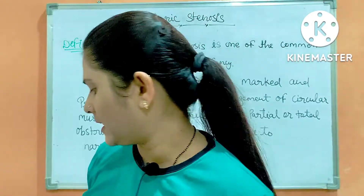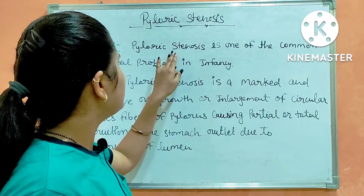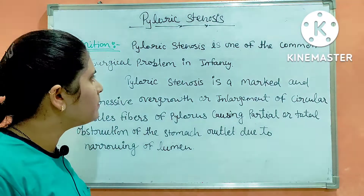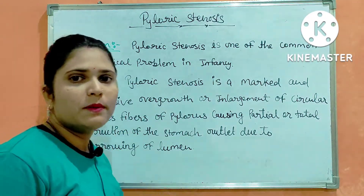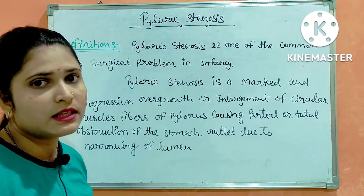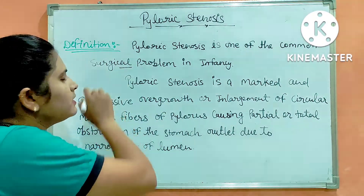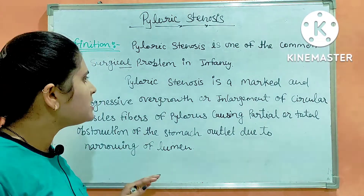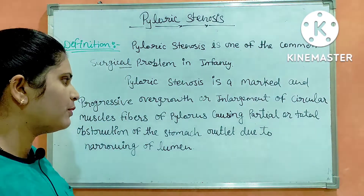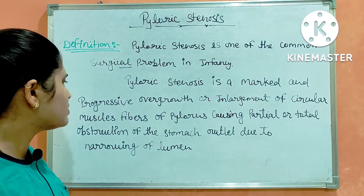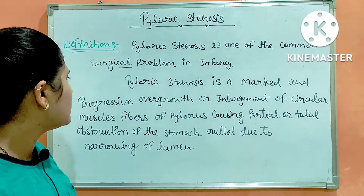What is pyloric stenosis? Pyloric stenosis is one of the common surgical problems in infants. It cannot be managed with medical management alone — surgery is required. Pyloric stenosis is marked by progressive overgrowth and enlargement of circular muscle fibers of the pylorus, causing partial or total obstruction of the stomach outlet due to narrowing of the lumen.